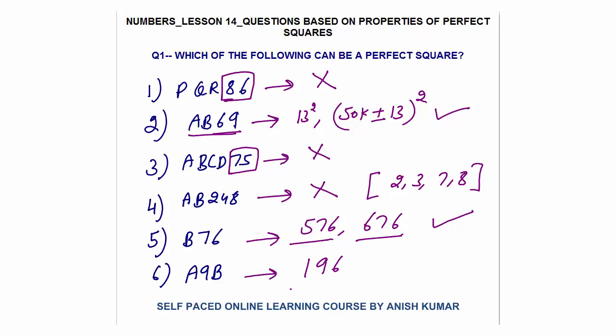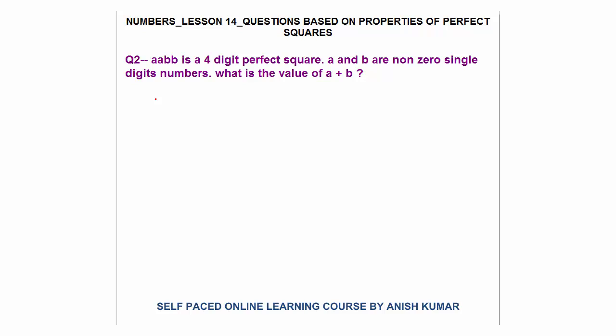And a9b can also be a perfect square, since 196 is one such example. Question 2: aabb is a four-digit perfect square, where a and b are non-zero single-digit numbers (1–9). What is the value of a + b? The last two digits are bb — same digit repeated.